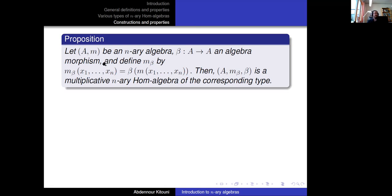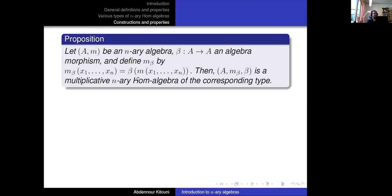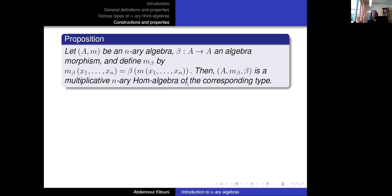A key construction produces N-ary hom-algebras from ordinary N-ary algebras: take an N-ary algebra and an algebra morphism beta, then define a new multiplication M_beta as M composed with beta on the left. This gives a multiplicative N-ary hom-algebra of the corresponding type: starting from an N-Lie algebra gives an N-hom-Lie algebra; from an N-Leibniz gives an N-hom-Leibniz; from totally associative gives totally hom-associative, and so on.